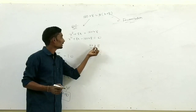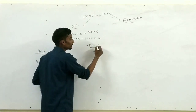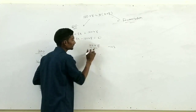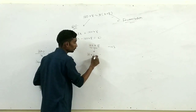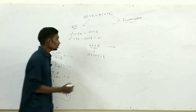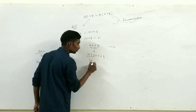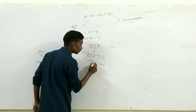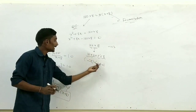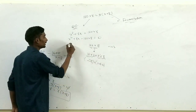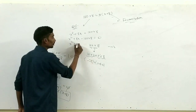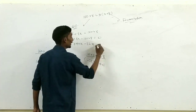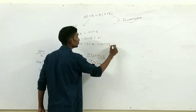1280 को factorize करते हैं: 160 × 8 = 1280। लेकिन 80 और 16 का difference 64 है, जो 8 नहीं है। फिर से factorize करते हैं: 160 × 8 = 2 × 5 × 8 × 16। 8×5 = 40 और 16×2 = 32, इनका difference 8 है। तो x² + 40x − 32x − 1280 = 0।